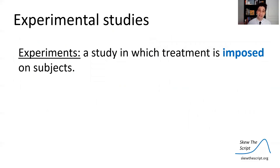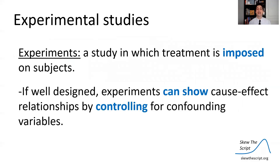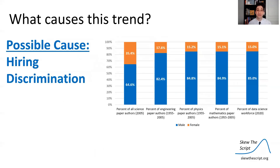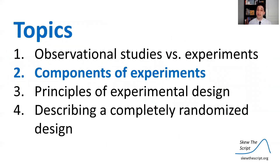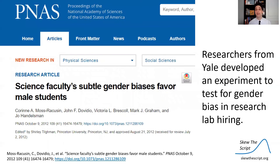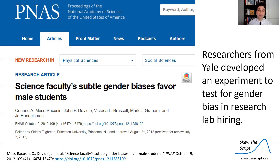However, let's talk about experiments. Experiments are studies in which a treatment is imposed upon subjects. If an experiment is well designed, you can show cause and effect by controlling for confounding variables. So how can we design an experiment to investigate whether hiring discrimination is the leading cause of these gaps? We'll discuss it using a real experiment done at Yale. A group of researchers there designed an experiment to test for hiring discrimination in science labs — we'll discuss a simplified version.